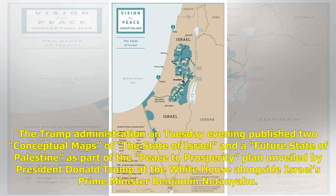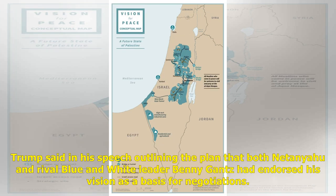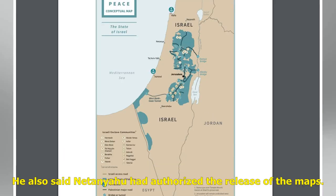The Trump administration on Tuesday evening published two conceptual maps of the state of Israel and a future state of Palestine as part of the Peace to Prosperity plan unveiled by President Donald Trump at the White House alongside Israel's Prime Minister Benjamin Netanyahu. Trump said in his speech outlining the plan that both Netanyahu and rival Blue and White leader Benny Gantz had endorsed his vision as a basis for negotiations. He also said Netanyahu had authorized the release of the maps.